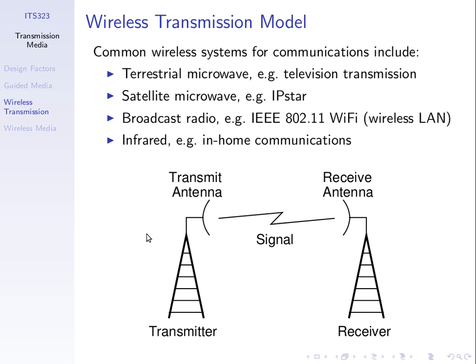Last week we covered wired media and started on wireless media or unguided media. We finished talking about antennas. We'll recap the relationship between an isotropic antenna, which is not a real antenna — it's an ideal theoretical antenna — and real antennas, which propagate their signal at different energy levels in different directions. We compare a real antenna to an isotropic antenna using the antenna gain.